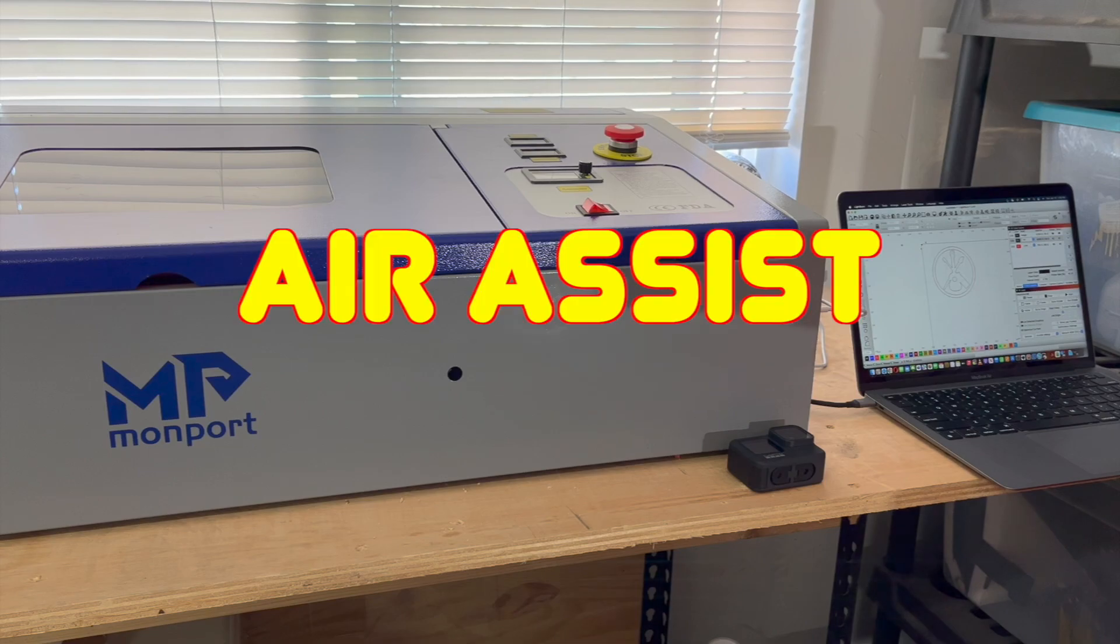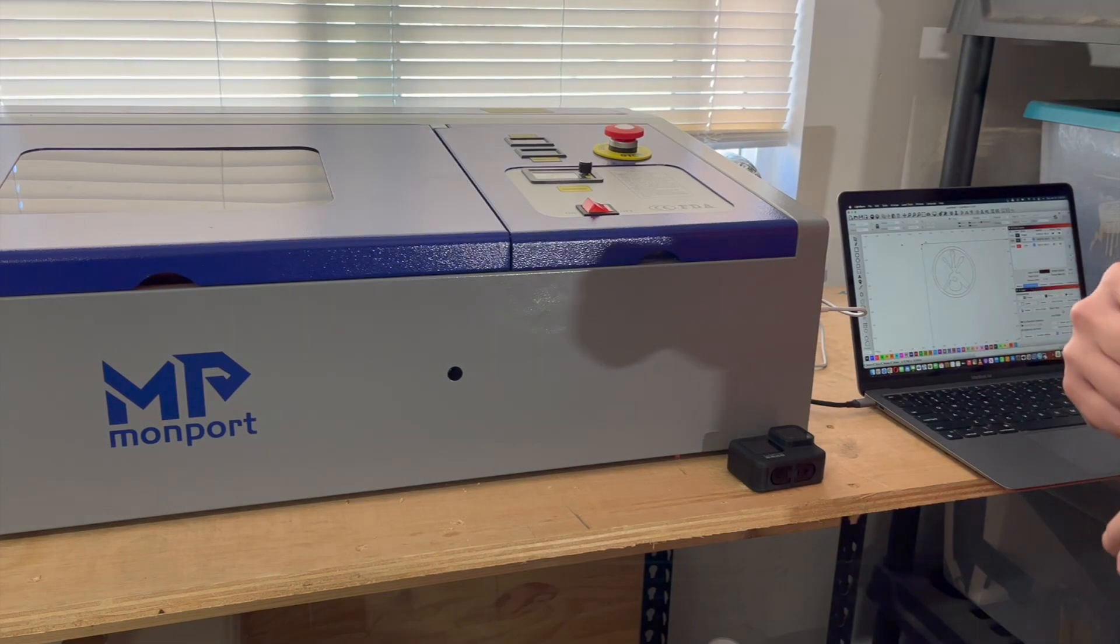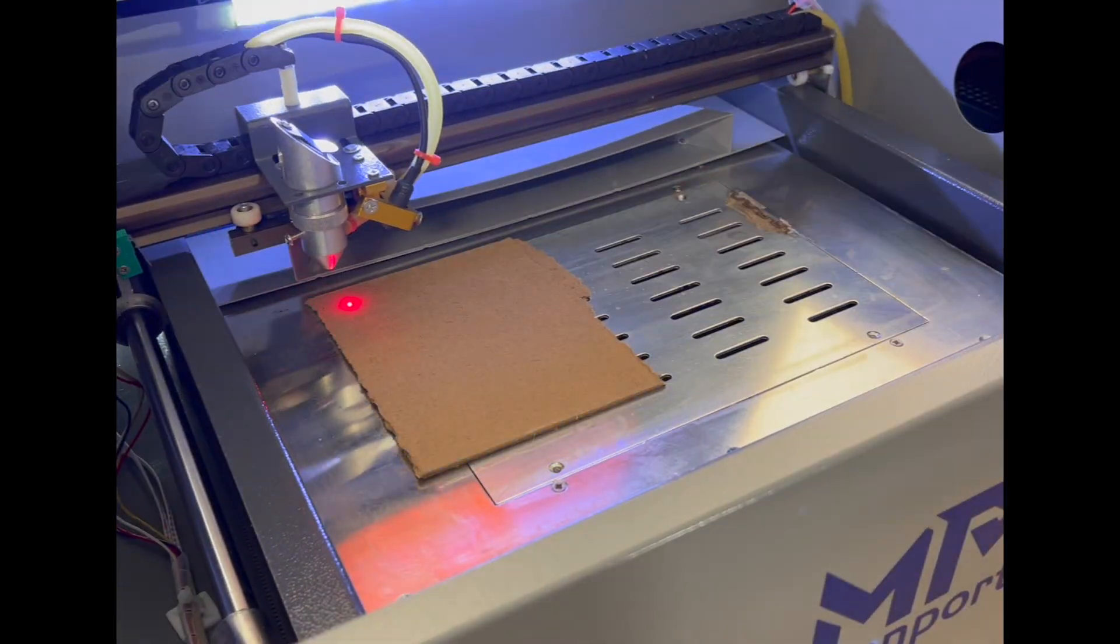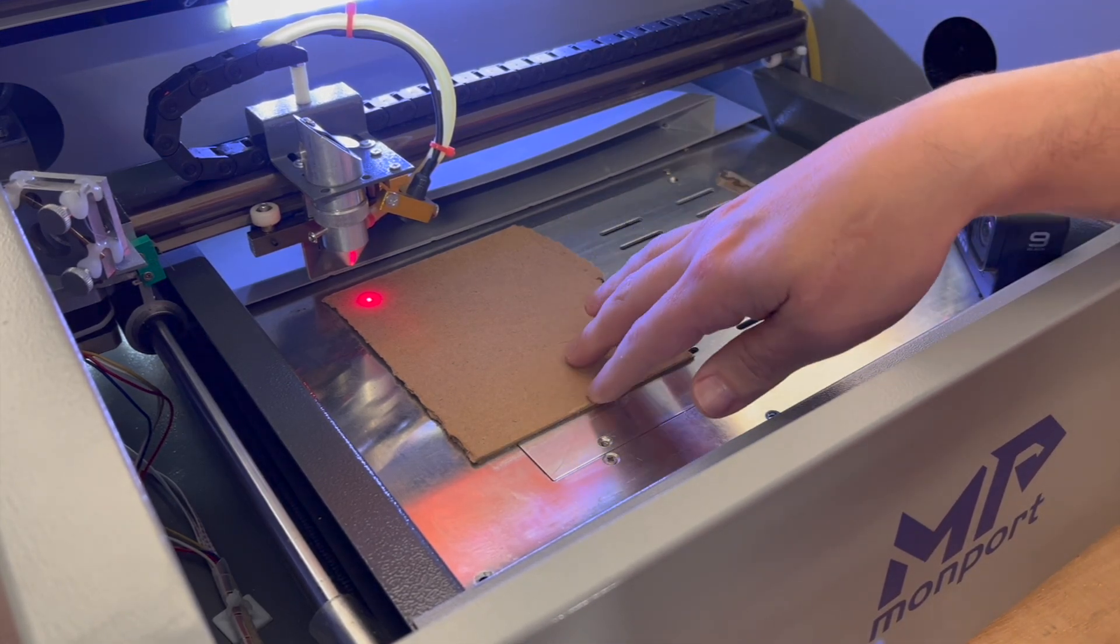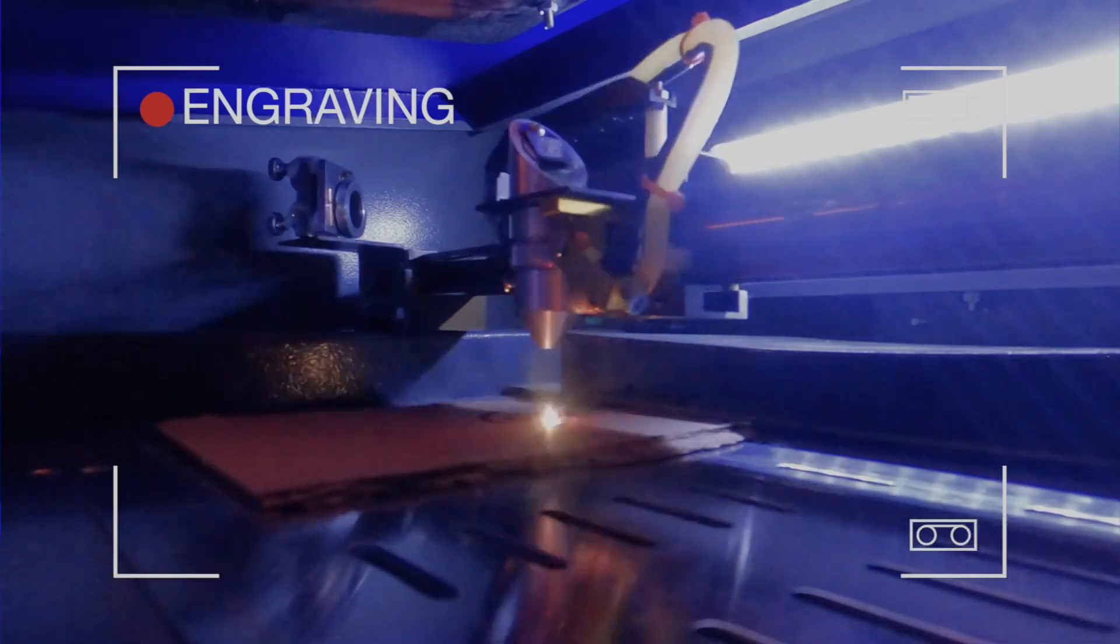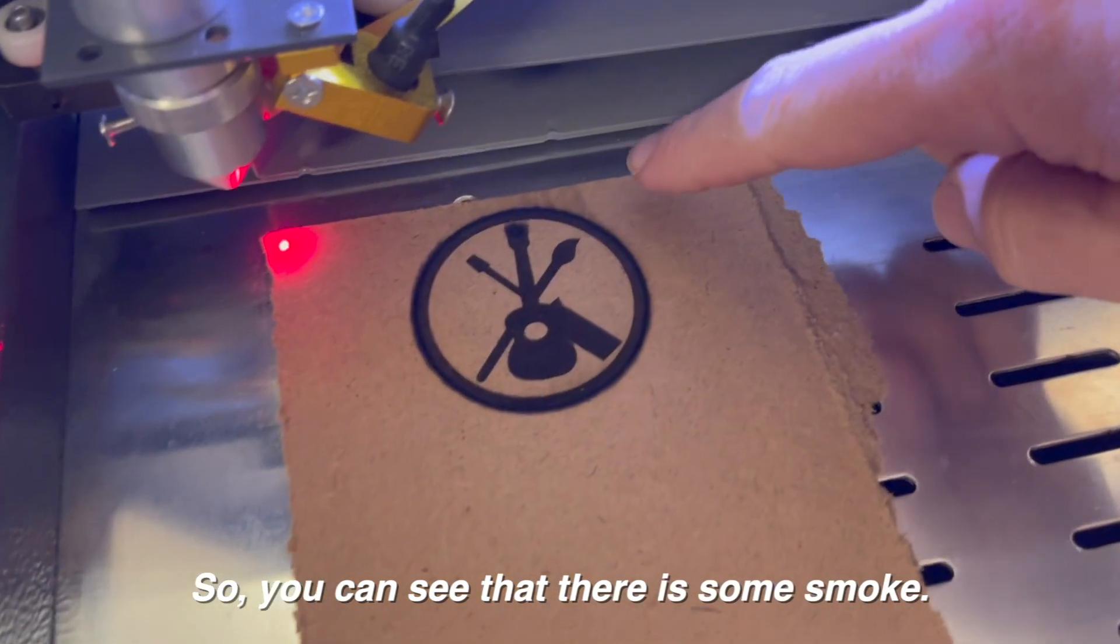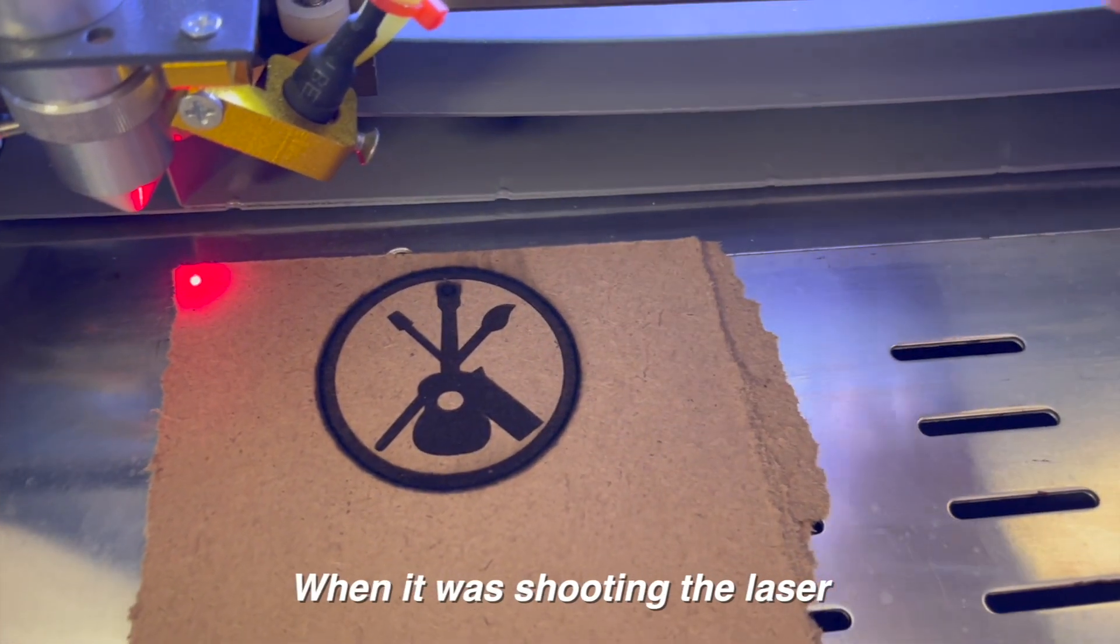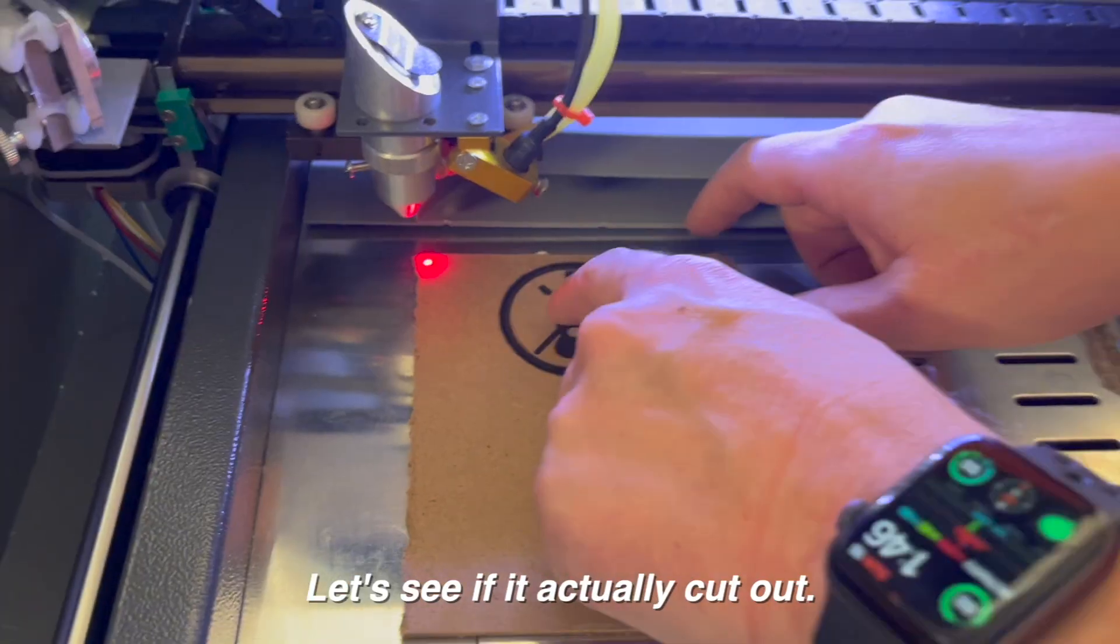We're going to show the difference between air assist on and air assist off to show you why we added an air assist to our machine and we'll go ahead and show the difference. Okay, so for this take we're going to do with no air on and we're just using an eighth inch MDF here for our test and we're going to try it out. All right, so you can see that there's some smoke, I wouldn't say damage, but soot here on the end. And when it was shooting the laser, which you'll see from the footage, there was a large flame that kind of stayed along the edge as it was cutting out. See if it actually cut out. It didn't actually go through.